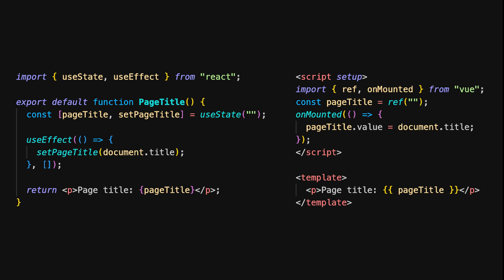Let's take a look at how both React and Vue handle logic that needs to run when a component is mounted, such as fetching data or interacting with the DOM. In React, you would typically use the useEffect hook for this purpose. useEffect is used to set the component's pageTitle state to the current document title when the component mounts. The empty dependency array ensures that this effect only runs once, when the component is first rendered. In Vue, we use the onMounted lifecycle hook to achieve the same effect — it runs code after the component has been mounted, similar to useEffect with an empty dependency array in React.